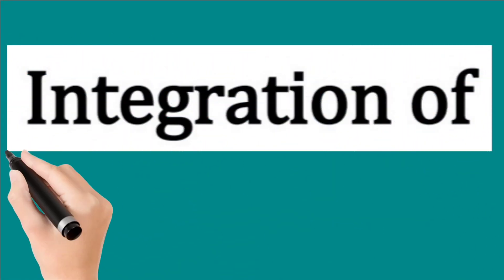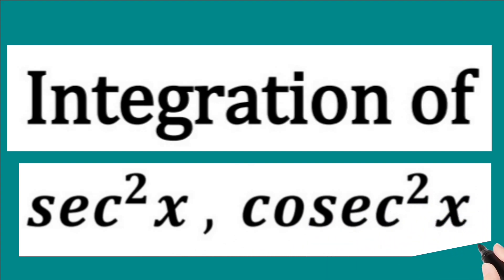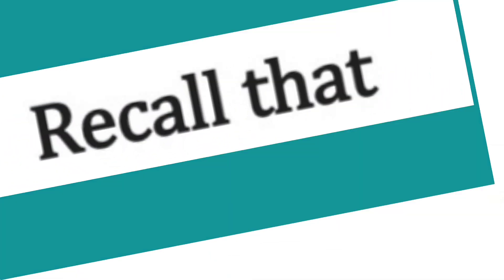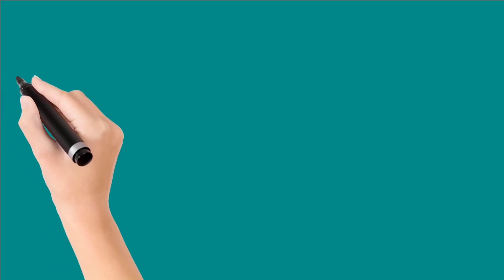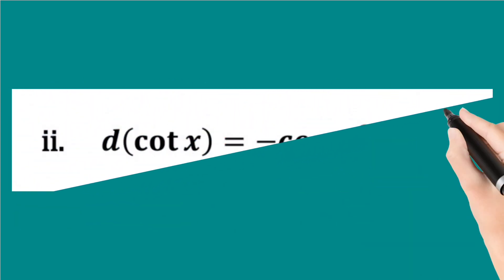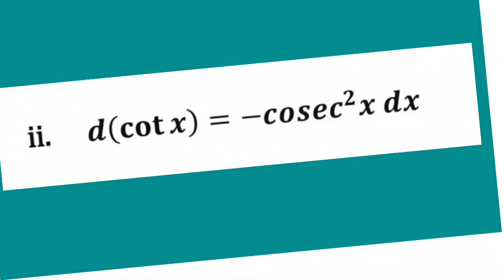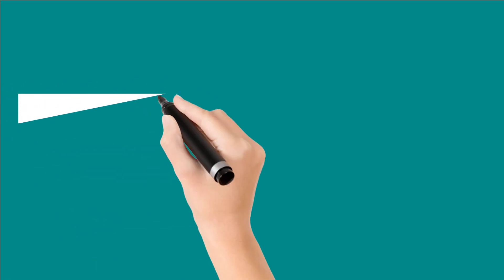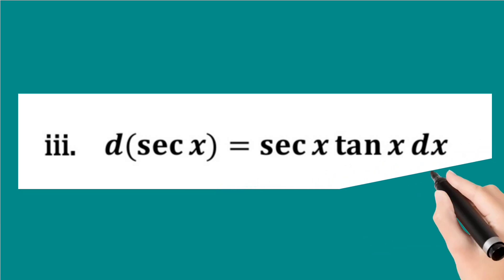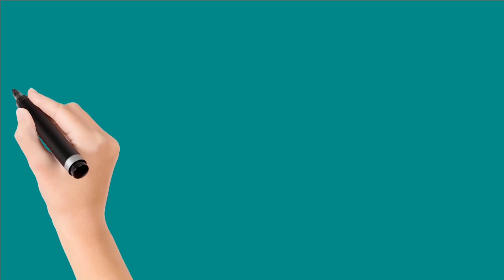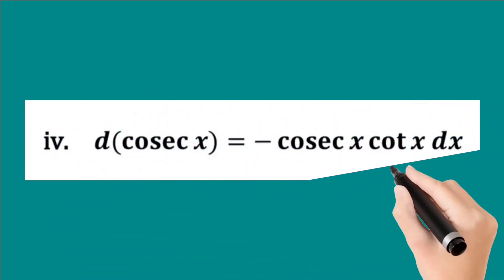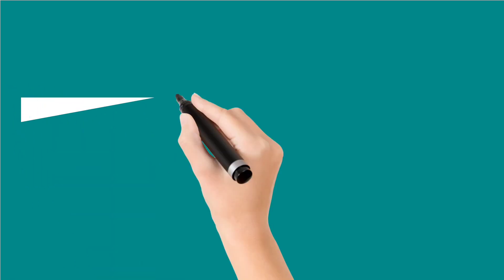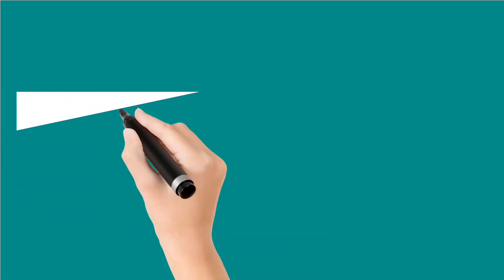Integration of sec square x and cosec square x. Recall that d(tan x) is equal to sec square x dx, d(cot x) is equal to minus cosec square x dx, d(sec x) is equal to sec x tan x dx, and d(cosec x) is equal to minus cosec x cot x dx.